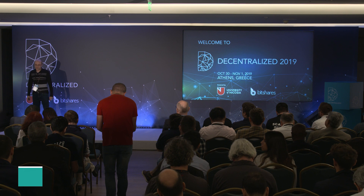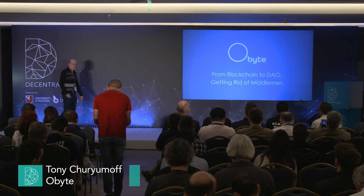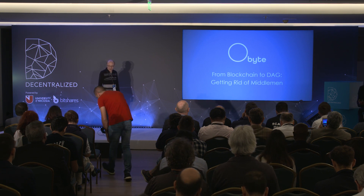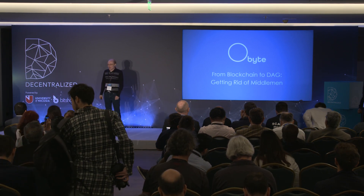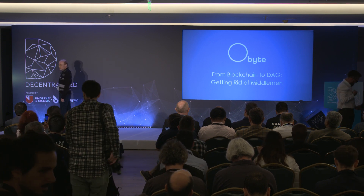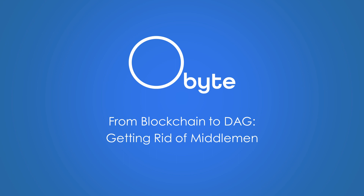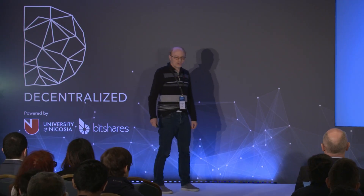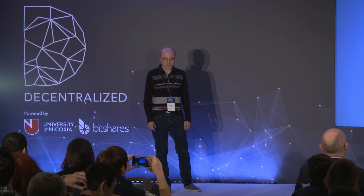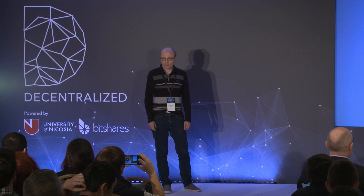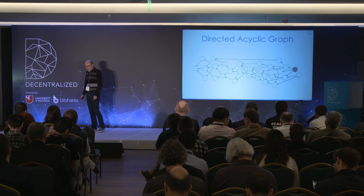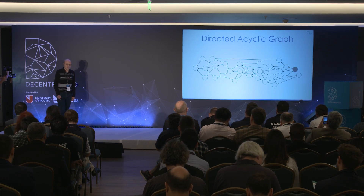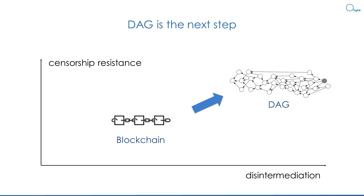My name is Tony Churyumov, founder of Obyte. I'll talk about using directed acyclic graph DAG for building distributed ledgers. I will not talk about scalability. I'll talk about things that make crypto different from what was before crypto — about decentralization, disintermediation, and censorship resistance. And I'll show that DAG is more disintermediated and more censorship resistant than blockchain.